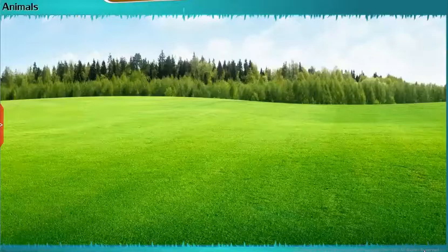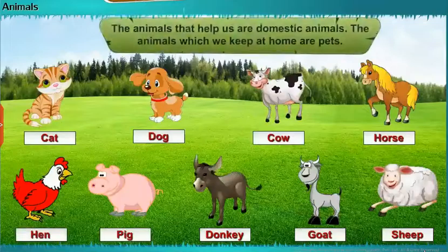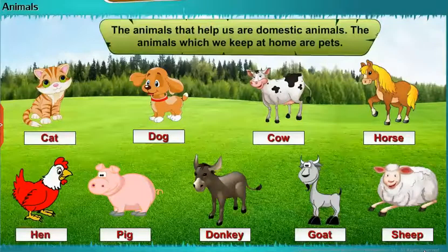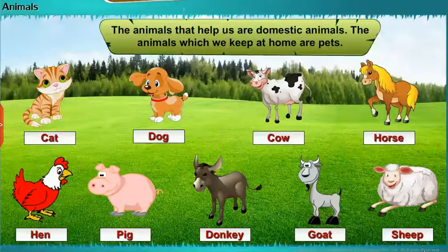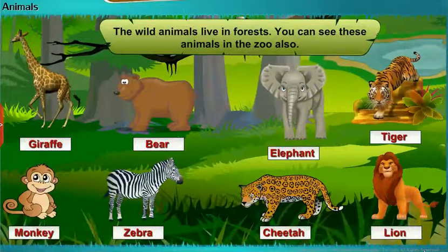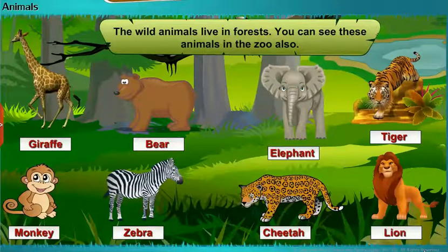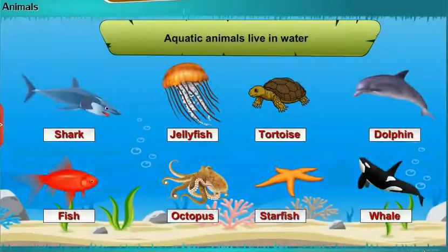Let us learn about animals. The animals that help us are domestic animals. The animals which we keep at home are pets. The wild animals live in forests — you can see these animals in the zoo also. Aquatic animals live in water.